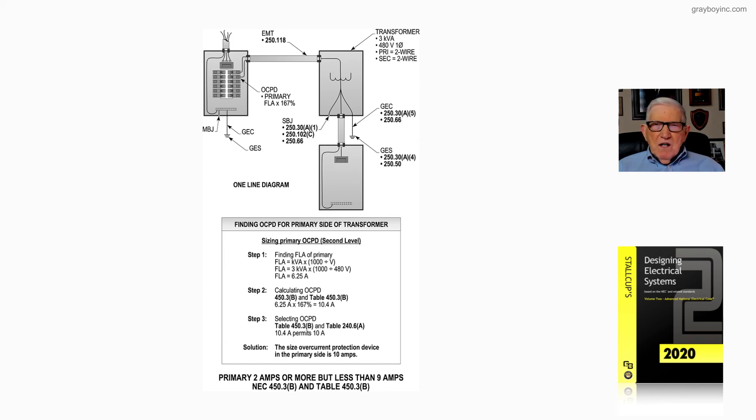Now, with this information given, as you see in the illustration, the overcurrent protection device in the primary side will be sized at 167% because the full load current of the transformer's primary side is less than 9 amps, but 2 amps or more. So next, we're going to perform the calculation.